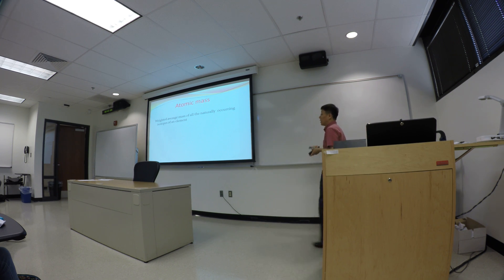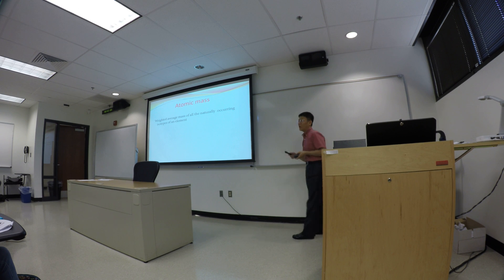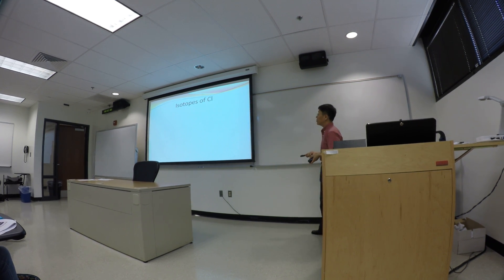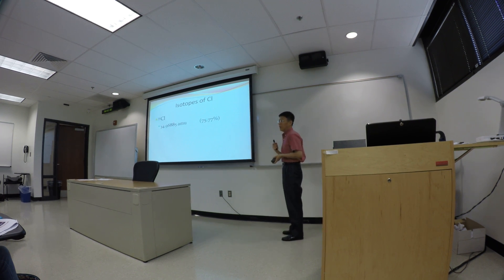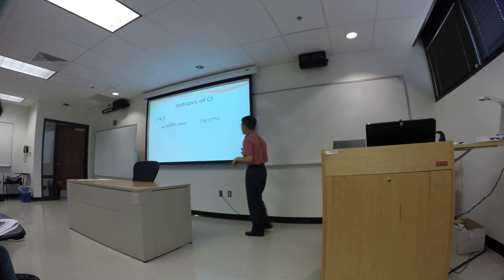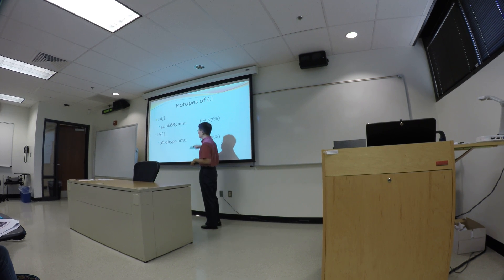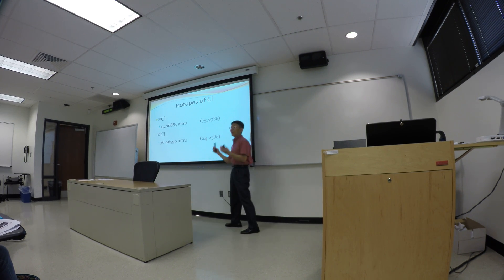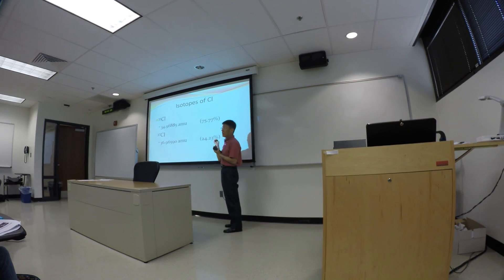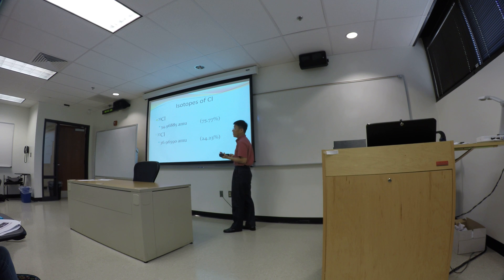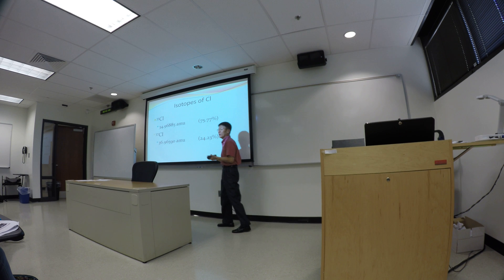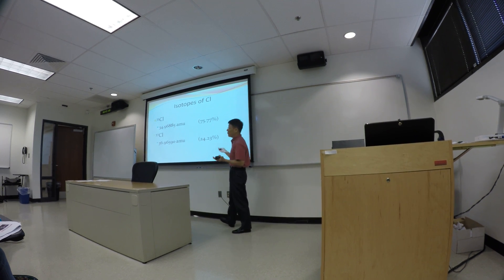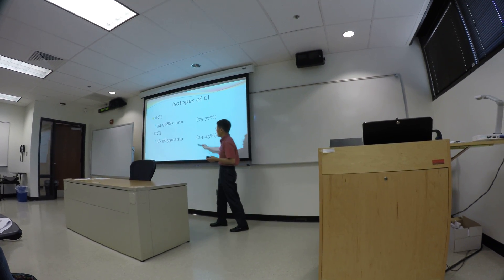Neon has three isotopes, so we calculate the weighted average. Using chlorine as an example: naturally occurring chlorine has two isotopes — chlorine-35 and chlorine-37. Using a mass spectrometer, we can determine that 75.77% of naturally occurring chlorine is chlorine-35, and the atomic mass for chlorine-35 is close to 35. The other 24.23% would be chlorine-37.